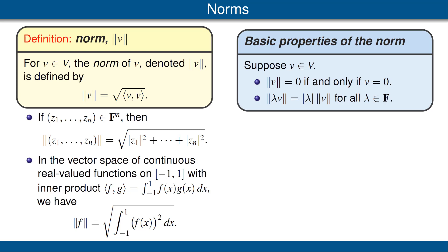Here are two basic properties of the norm. Suppose we have a vector v in our inner product space V. The first property states that the norm of v equals 0 if and only if v is the zero vector. The second property states that the norm of a scalar times v is the absolute value of that scalar times the norm of v.